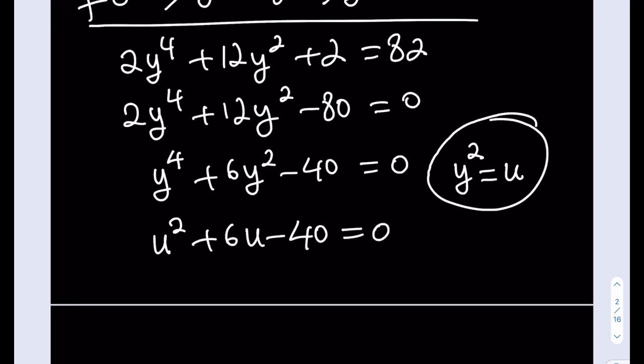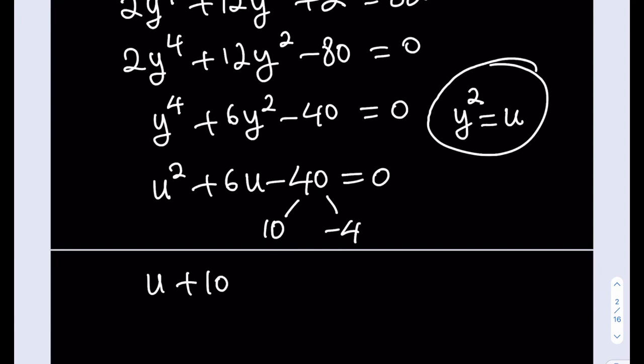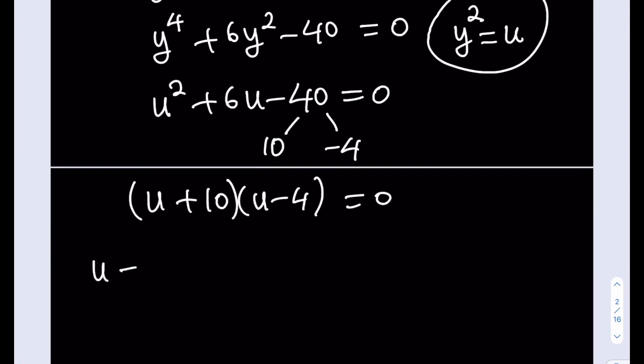We ended up with a quadratic, which is super easy to solve. Do you know why? Because it's factorable. I got to find two numbers whose product is negative 40 and whose sum is 6. You must know how to factor trinomials. So what are my numbers? My numbers are 10 and negative 4 because their sum is positive 6. Awesome. This means that I have u plus 10 multiplied by u minus 4 being equal to 0. And this means that u is equal to negative 10 or u is equal to 4.